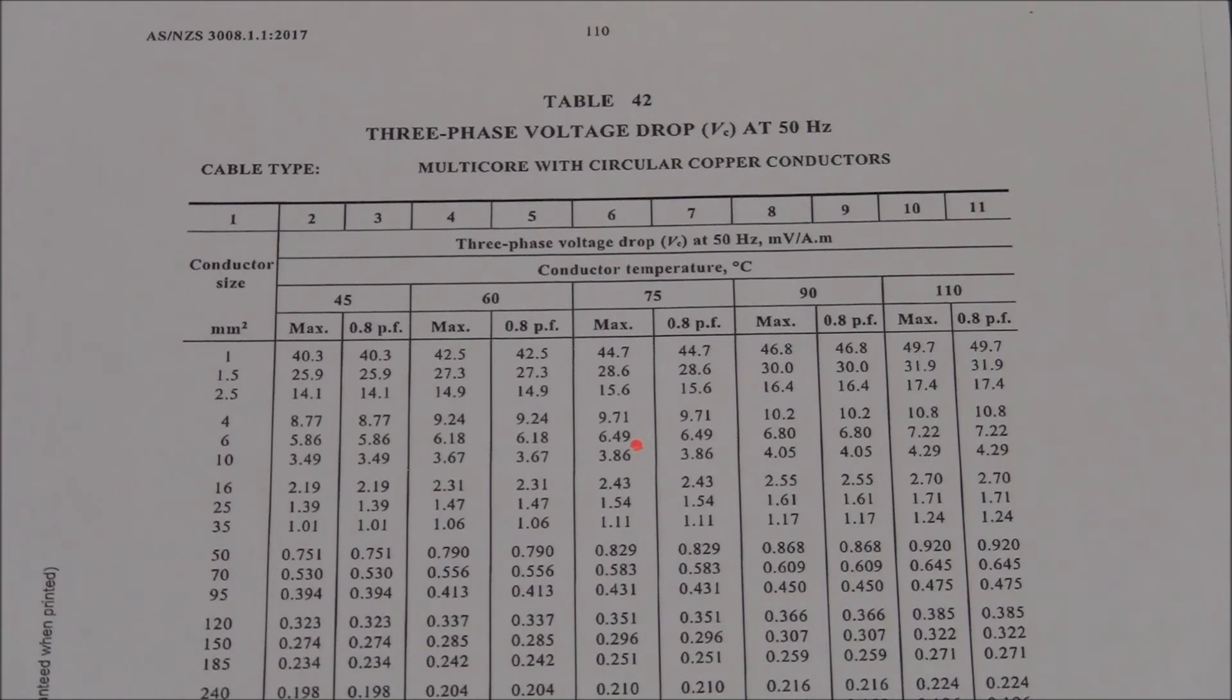Larger cables have lower voltage drop values. A 630 millimetre square cable would be brilliant to minimise voltage drop, but you cannot fit them in the light switch terminals.